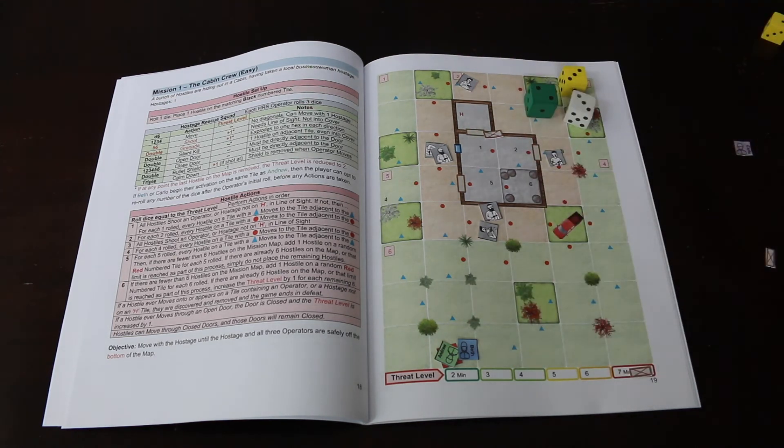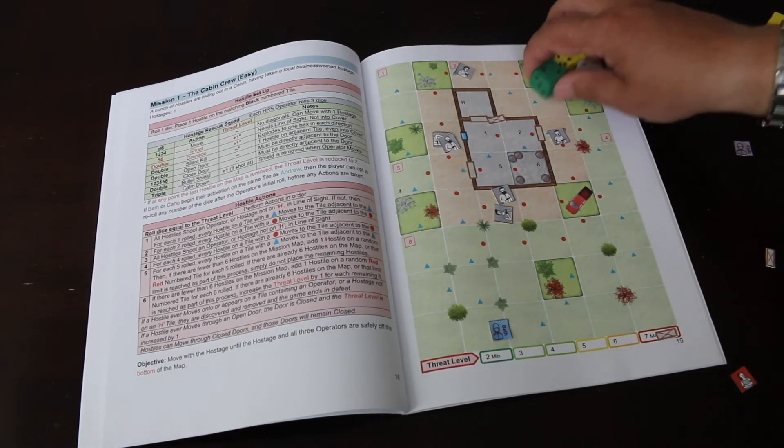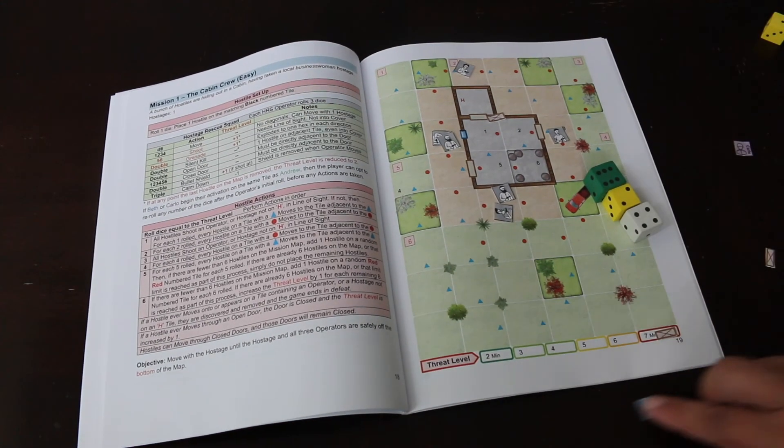Andrew and the hostage make it off the map. Beth makes it off the map. So they win. This is the easiest scenario here.